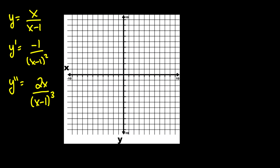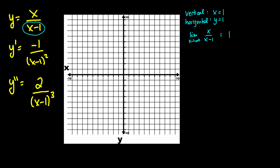For our first example, the function, its derivative, and its second derivative are given to keep things simple. First let's check our asymptotes. We have a vertical asymptote at x equals one, which we know by looking at the denominator of our function. For the horizontal asymptote, we take the limit as x goes to infinity of x over x minus one. You can see very quickly that this is one due to the shortcut, so we have a horizontal asymptote at y equals one. You get the same result for negative infinity.